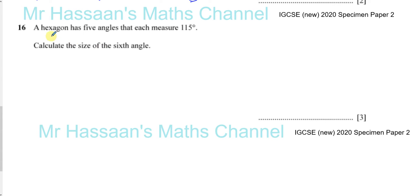So a hexagon, now don't get confused by this wording. A hexagon has five angles? No, a hexagon has six angles, but the question is telling you five of the angles are 115 degrees, and the sixth angle is the one that you need to find. So don't think a hexagon has five angles, no, a hexagon actually has six angles, but five of them are 115 degrees, and you need to find the size of the sixth angle. So all the five angles are the same, but the sixth angle we've got to find what it is.